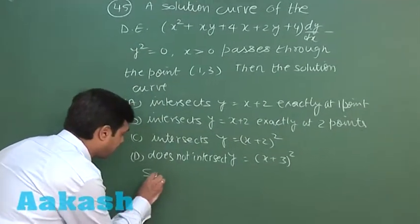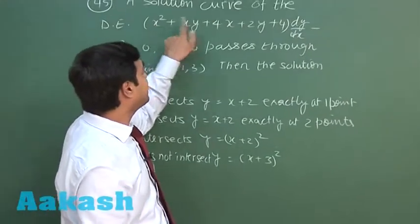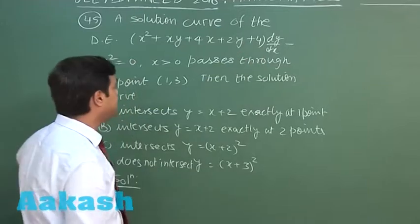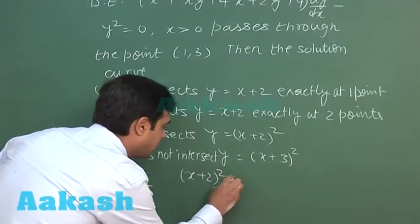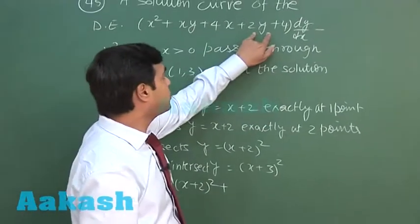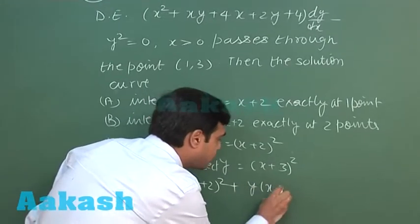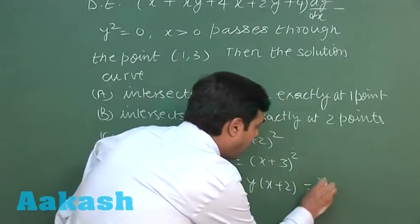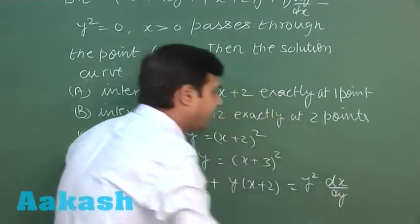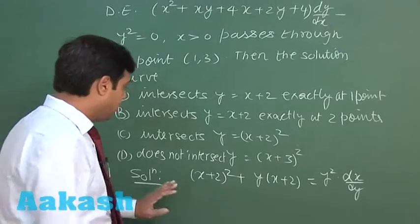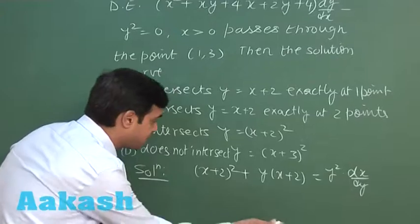We can rewrite the equation: x² + 4x + 4 is (x+2)², and xy + 2y is y(x+2). So the equation becomes (x+2)² + y(x+2) = y² · (dx/dy). Dividing by y²·(x+2)², we convert this towards a linear differential equation.